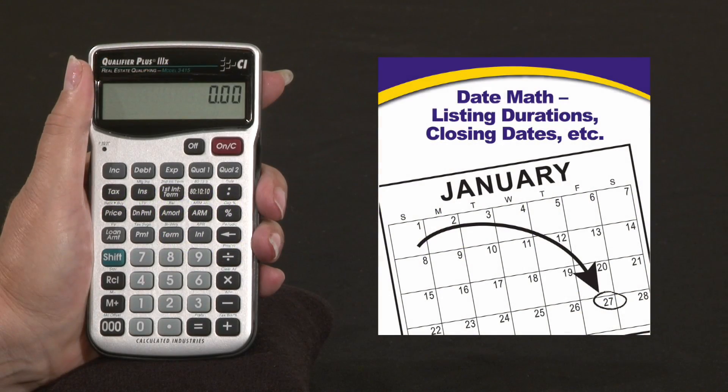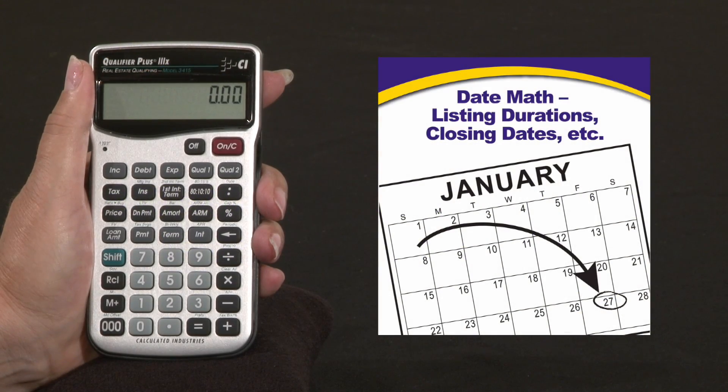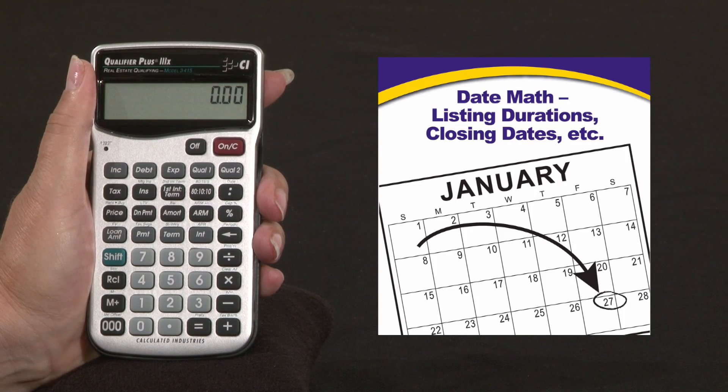Date math is a great function that's also available on the Qualifier Plus 3x desktop and FX. You can calculate your closing dates, your listing durations, etc.